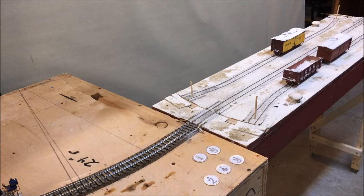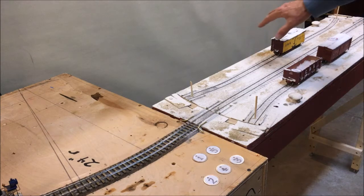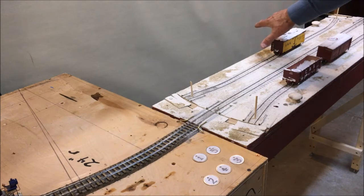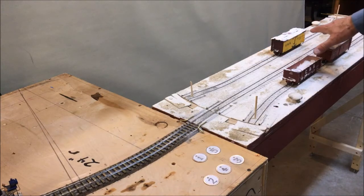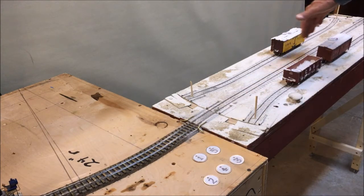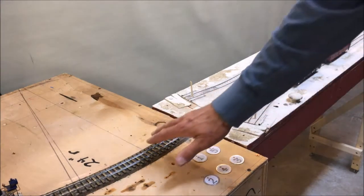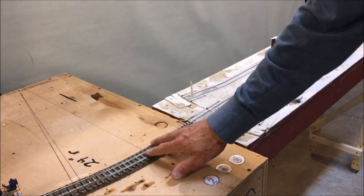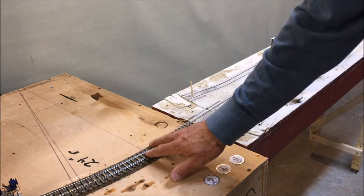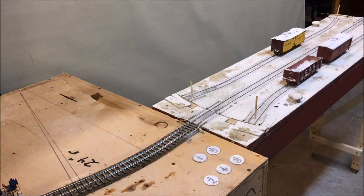Now the Inglenook switching puzzle in the condensed version allows us to have a siding with a two-car capacity, another siding with a two-car capacity, a track with a five-car capacity, and a switching lead with a capacity of one locomotive and two cars. So although I don't have any boundaries set up on the sector plate fiddle yard today, those are the rules I'm going to observe. So let's start out by having our train arrive in town.